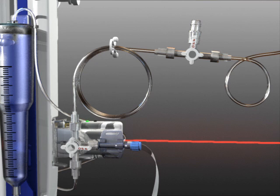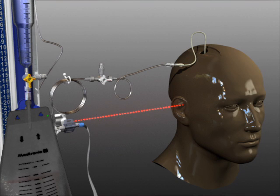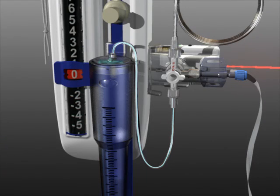Before zeroing the transducer to atmospheric pressure, it's important that two conditions be met. One, the drainage system should be level with the patient. Two, the tubing between the transducer and the top of the drip chamber must be completely filled with fluid.